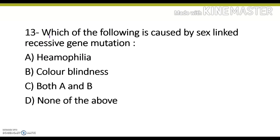Which of the following is caused by sex-linked recessive gene mutation? Haemophilia, color blindness, both A and B, or none of the above. Its correct answer is option C, both A and B. Both diseases are sex-linked recessive diseases. In haemophilia, when we have a cut from injury, we have non-stop excessive bleeding. Color blindness is the disease in which we lose the ability to distinguish between colors.